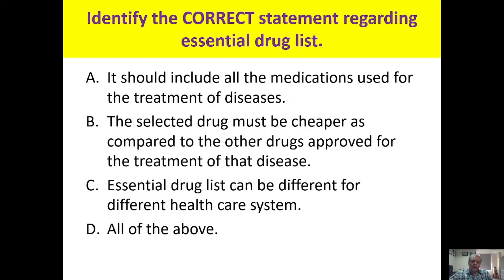The selected drug must be cheaper compared to other drugs approved for treatment of the disease. Cost is one of the criteria, but it is not obligatory. If another drug is more effective and safer but costlier, then one has to go for the costlier drug.